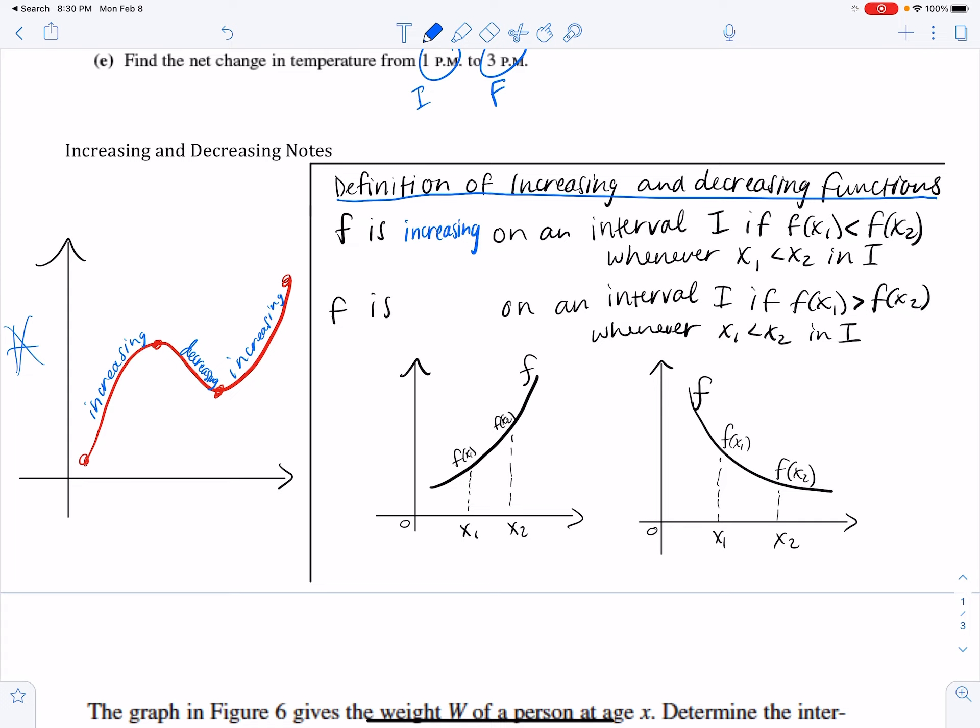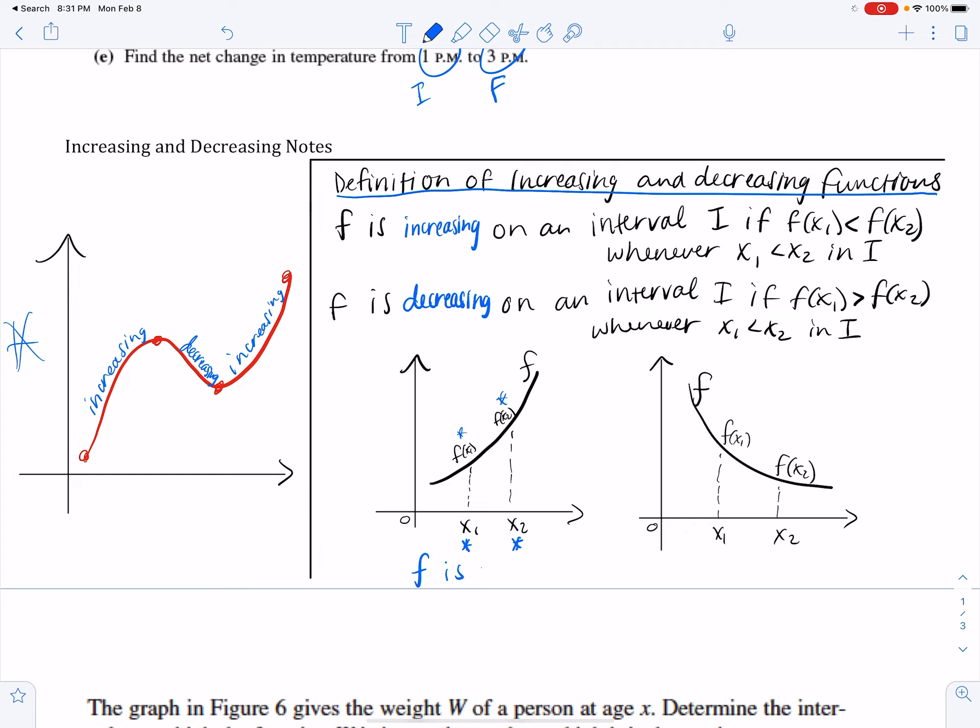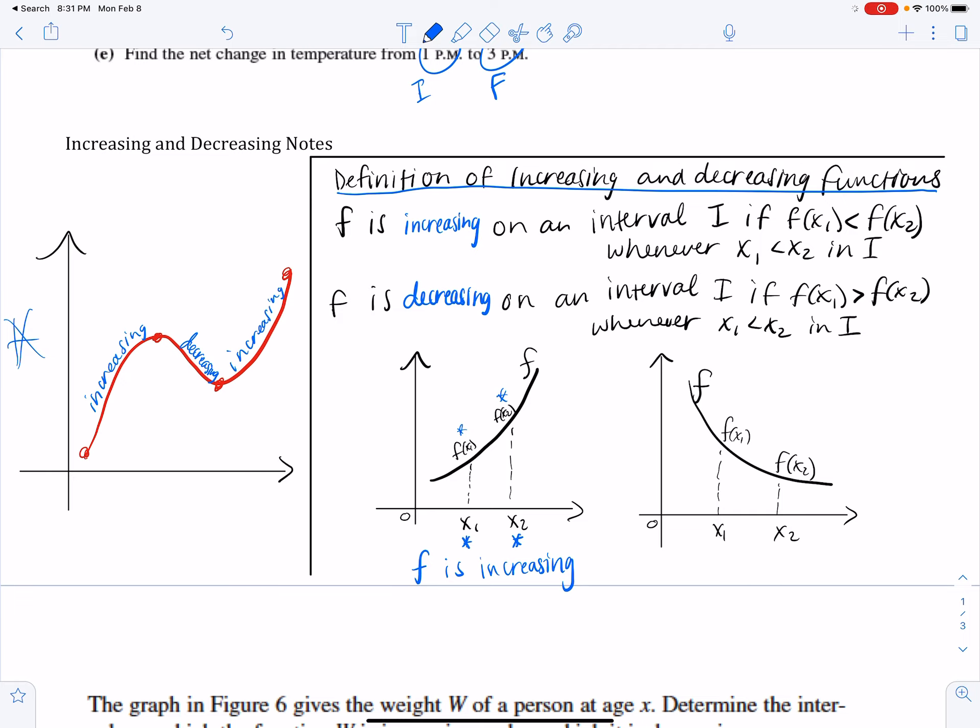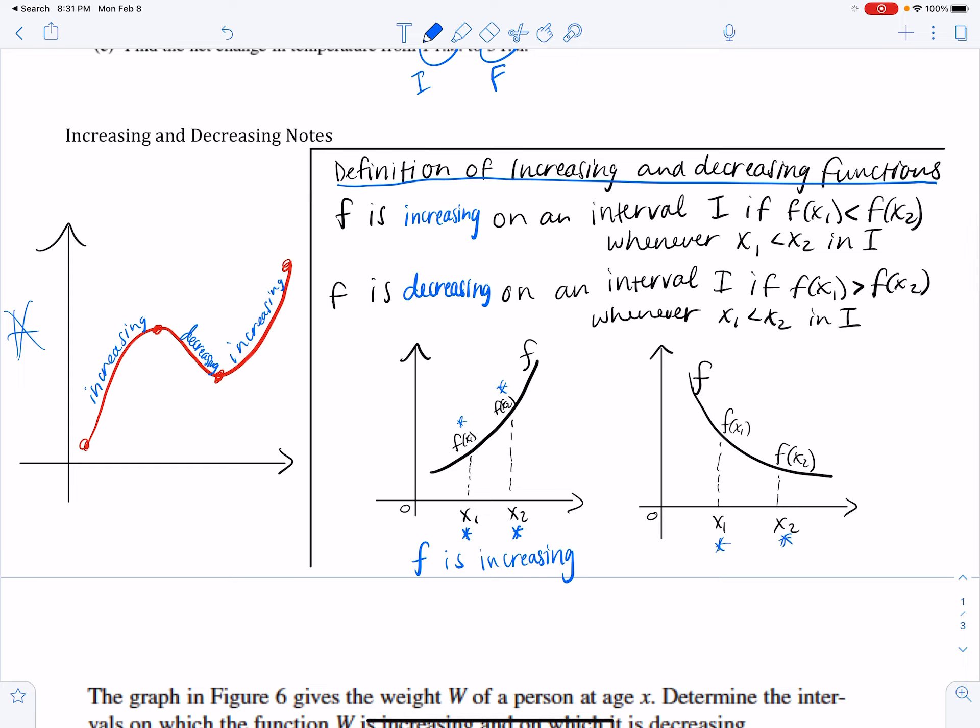And then on the other hand, f is decreasing on interval I if the first y-value is greater than the second, so it's getting smaller over time whenever x1 is less than x2. Here are the two examples. We have x1 first, x2 always comes second. f(x1) up here is smaller than f(x2), which means it's getting bigger over time, so in this example obviously f is increasing. And then in the opposite over here, you have function f, you have x1 first, x2 second, and f(x1) here is greater than f(x2). This value is smaller, so over time f is decreasing in this example.